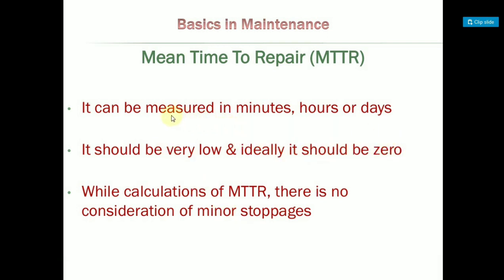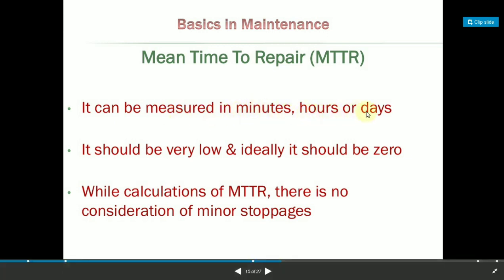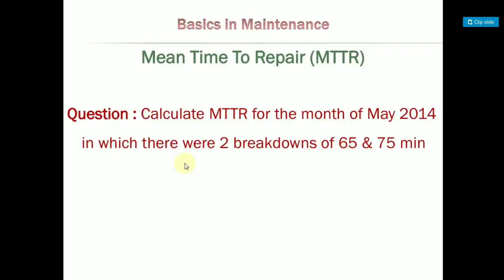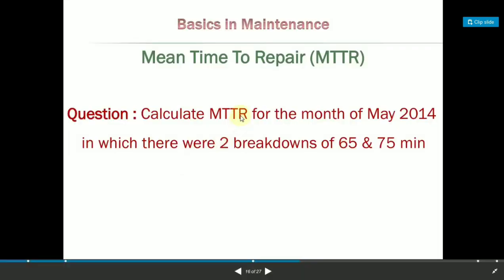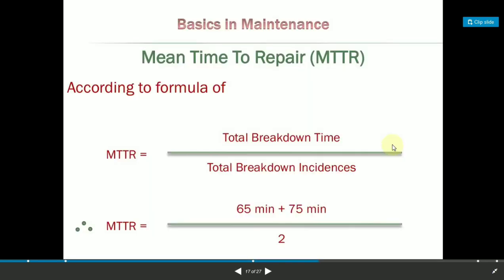For the MTTR example: suppose there are two breakdowns — one of 65 minutes and one of 75 minutes. The total breakdown time is 65 plus 75 minutes. The formula for MTTR is total breakdown time divided by total number of breakdown incidents. In total, we have the combined hours and minutes, and we divide by the number of incidents to get the mean time to repair.